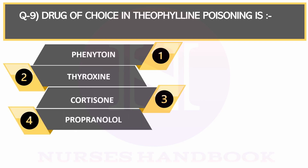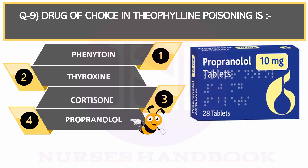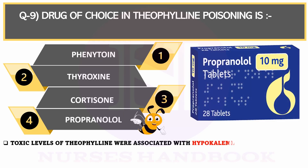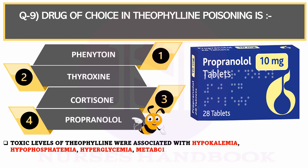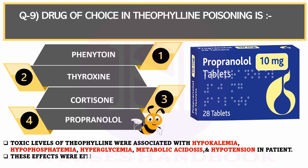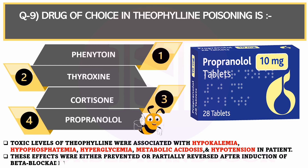The correct answer is Propranolol. Toxic levels of theophylline cause hypokalemia, hypophosphatemia, hyperglycemia, metabolic acidosis, and hypotension in patients. These effects can be prevented or partially reversed by giving beta blockers like Propranolol.